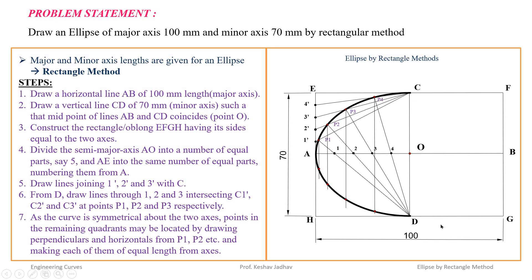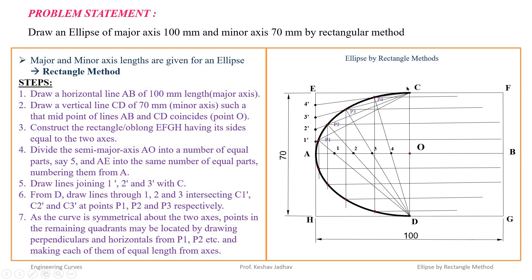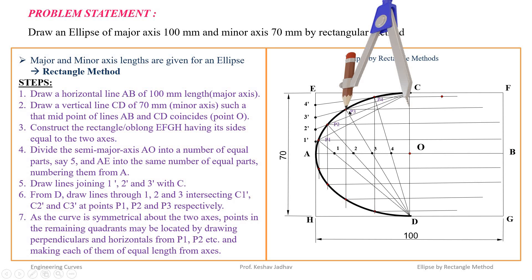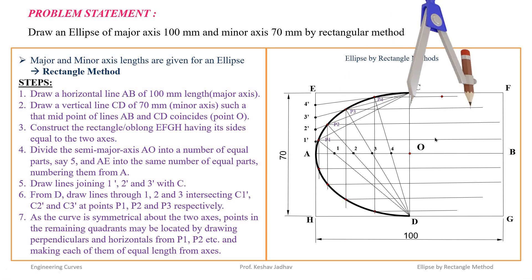On the right-hand side we also get a symmetric curve along axis CD. Draw horizontal lines from all points on the right-hand side of the axis. Using a compass, measure the distance on the left side of the CD axis and mark the corresponding point on the right side. Do this for all remaining points on the left side of the vertical axis CD.